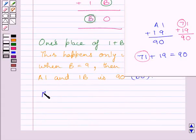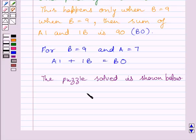Now we can write, for B is equal to 9 and A is equal to 7, A1 plus 1B is equal to B0. So, now the puzzle solved is shown below, 71 plus 19 gives 90.